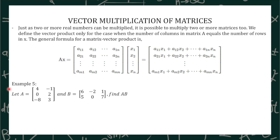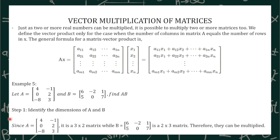Let A equal [4, -1, 0, 2, -8, 3] and B equal [6, -2, 1, 5, 0, 7]. Find AB. The first step is to identify the dimensions of both matrices. The dimension of matrix A is 3 by 2, and the dimension of matrix B is 2 by 3. The number of columns in our first matrix should be the same as the number of rows in our second matrix — in this case they are both 2, meaning they can be multiplied. If the number of columns in the first matrix is not equal to the number of rows in the second matrix, the product is undefined.